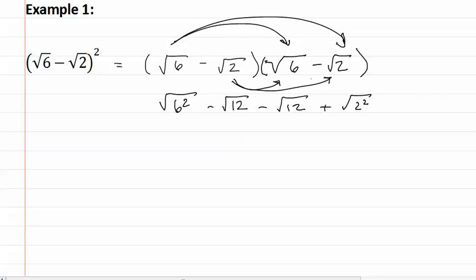Now we simplify the radicals on the ends and we combine those in the middle. The square root of 6 squared is 6 and the square root of 2 squared is 2 and then we have negative square root 12 and negative square root 12, which means we have 2 square root 12. We can now combine the 6 and the 2 to give us 8 minus 2 square root 12. This is our final answer.